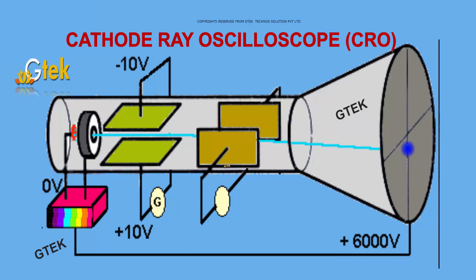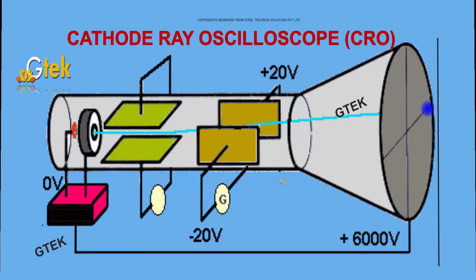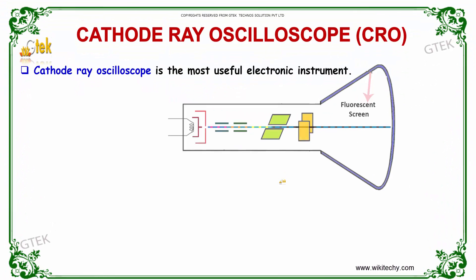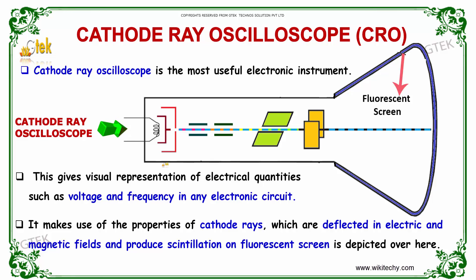Let's first proceed with cathode ray oscilloscope. You can see here how the depiction of cathode ray oscilloscope is over here. The cathode ray oscilloscope is the most useful electronic instrument. This gives visual representation of electrical quantities such as voltage, frequency in any kind of electronic circuit.